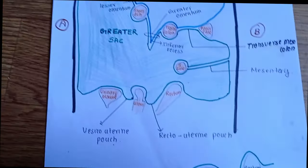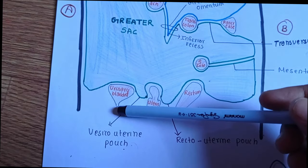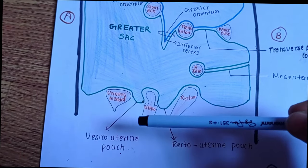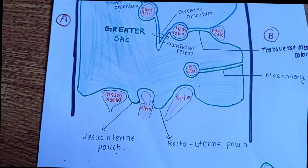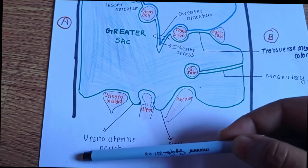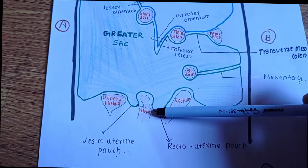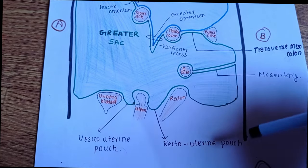Let us talk about the pouches now. Here we can see the pouches between urinary bladder and uterus, and uterus and rectum. As this pouch is between the urinary bladder and the uterus, we call this vesico-uterine pouch. And as this pouch is between the uterus and rectum, we call it recto-uterine pouch.